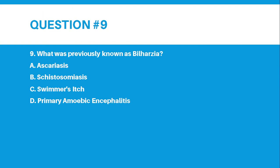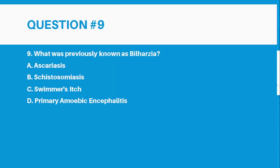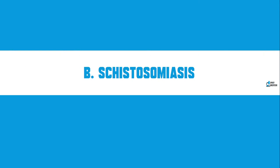Number 9. What was previously known as Bilharzia? A, ascariasis; B, schistosomiasis; C, swimmer's itch; or D, primary amoebic encephalitis. And the answer for number 9 is letter B, schistosomiasis.